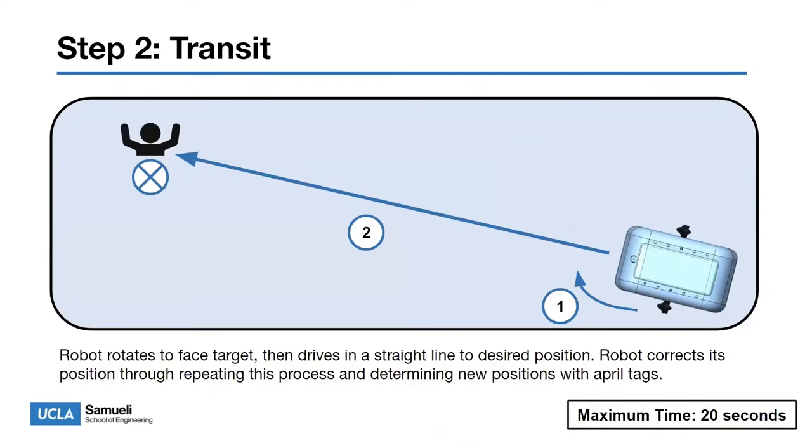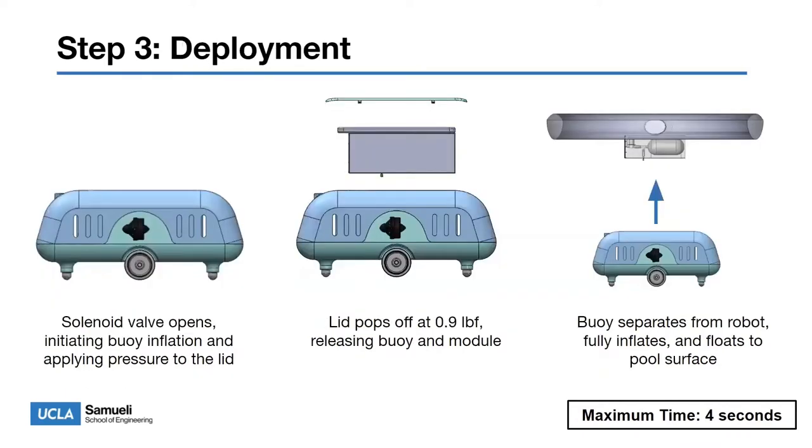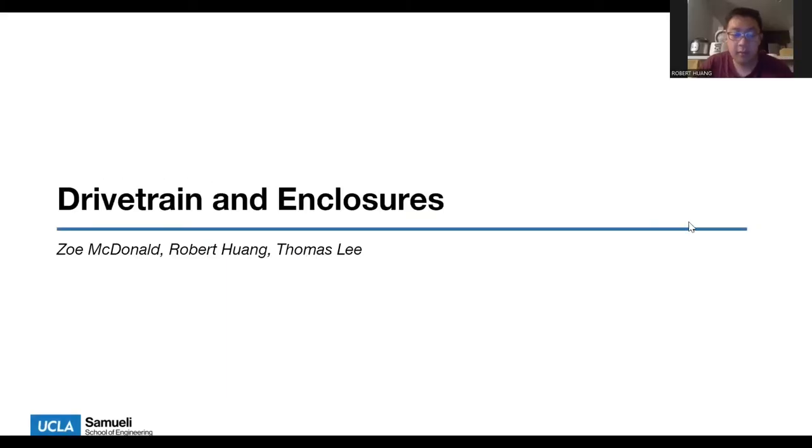For deployment, first the solenoid valve opens, inflating the buoy, initiating buoy inflation and applying pressure to the lid. The lid is designed to pop off at 0.9 pounds, which is almost instantaneous, and this releases the buoy and the module from the robot. The buoy then separates from the robot, fully inflates, and floats to the pool surface.